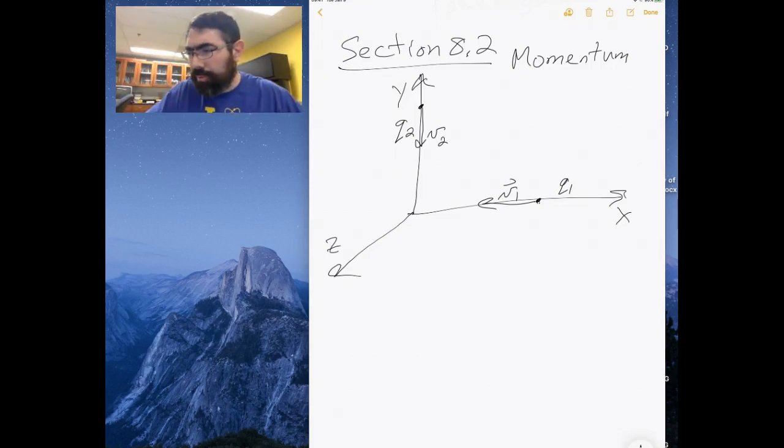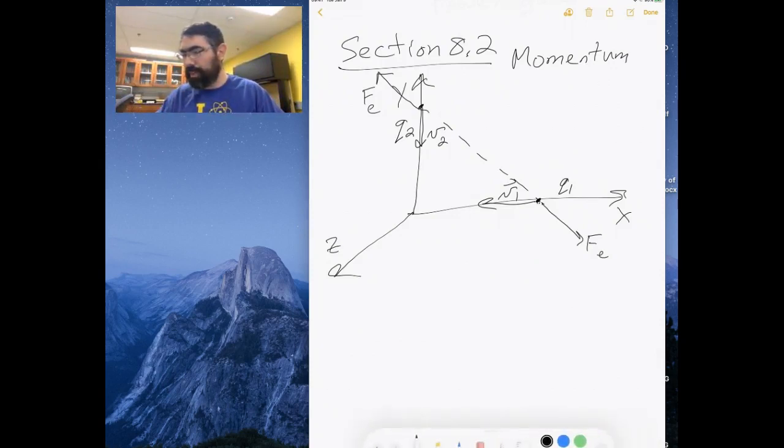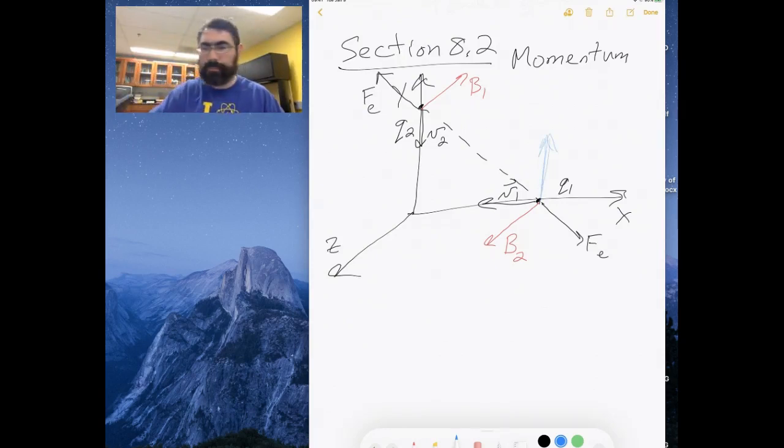If we look at what's going on, what forces we'd have, well we'd have the electric force along this diagonal line. Now we'd also have, let's say, a magnetic force. So in this case, the B field created by the moving charge 2 creates B2, and the B field created by moving charge 1 creates B1, which means I would now get a magnetic force, and another magnetic force like this.